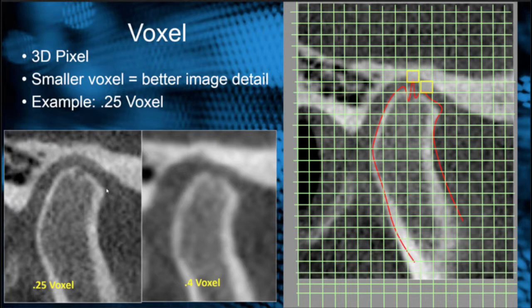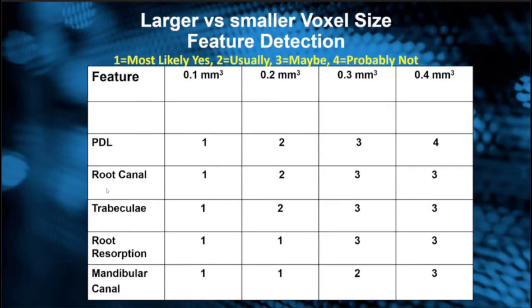One way that you can do this is a scan on a patient, but you can also maybe do a line pair test or some type of testing to detect certain features within the patient's jaws. If you want to look at the periodontal ligament space and we're using a 0.4 voxel scan, and you do this type of chart, we may not be able to see that particular structure.